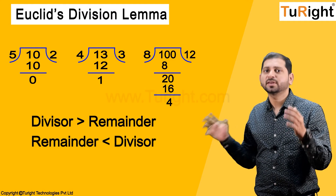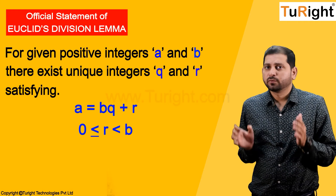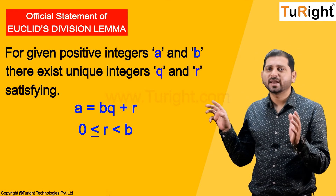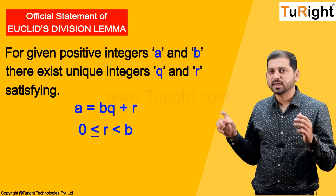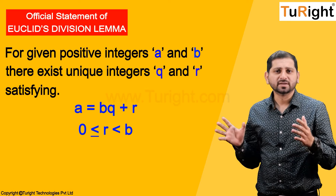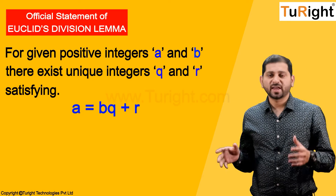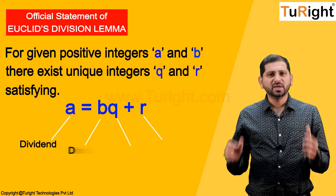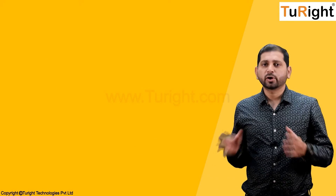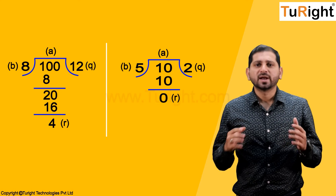Now let us see how division is associated with Euclid's Division Lemma. The official statement is: for given integers a and b, there exist unique integers q and r, where r is greater than or equal to 0 but less than b, such that a = bq + r. Here, a is the dividend, b is the divisor, q is the quotient, and r is the remainder.